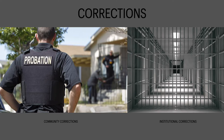Institutional corrections — represented here, you can see the prison bars — include jails and prisons. Prisons are state and federally run facilities, and jails are locally administered facilities. Jails and prisons are secure institutions used to house sentenced offenders or those awaiting trial.